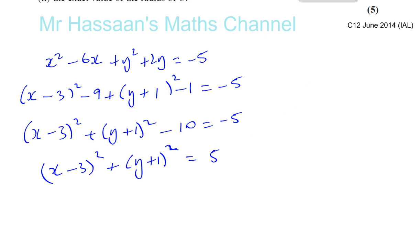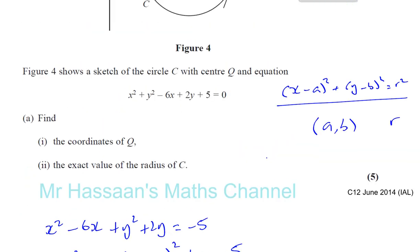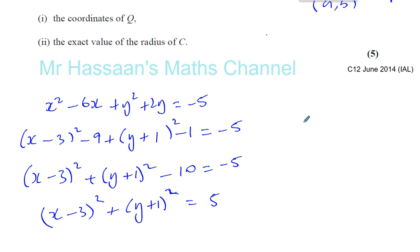So I can say that the center of the circle, which is given the letter Q, the center of the circle Q is going to be the opposite of this, which is going to be 3, and the opposite of that, which is minus 1. That will be the center of the circle. And the radius is going to be given by the square root of 5, the positive square root of 5.